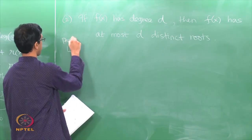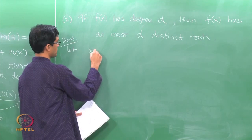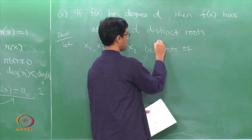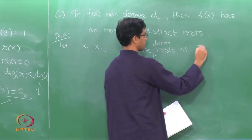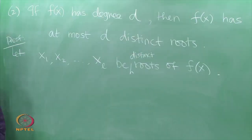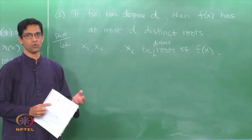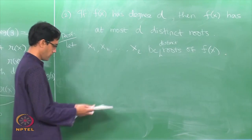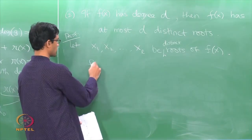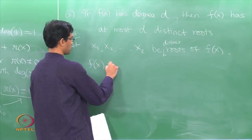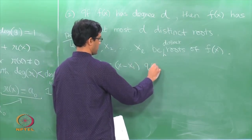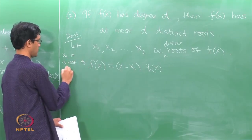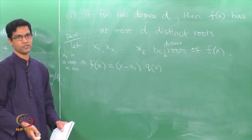Here is a proof of this fact. Let us write down all the roots. Suppose we know some roots: let x₁, x₂, ..., xₗ be distinct roots of f. We use the first application — any time we have a root, if a is a root then (x − a) divides the polynomial f. Since x₁ is a root, we conclude f(x) is divisible by (x − x₁), so f(x) = (x − x₁) · q(x).